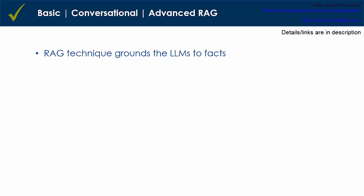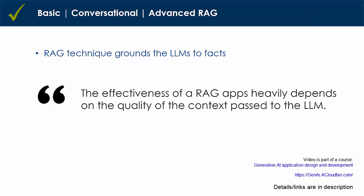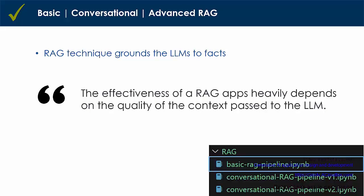In this lesson I introduced you to the basic, conversational, and advanced RAG pipelines. The retrieval augmented generation or RAG technique grounds LLMs to facts. RAG helps with reducing the chances of hallucination, it addresses the knowledge cutoff challenge, and it makes the LLM use the temporary knowledge in the prompt, which in turn prevents the LLM from generating imprecise responses. The effectiveness of a RAG application heavily depends on the quality of the context passed to the LLM. Starting with the next lesson you will learn multiple techniques that can enhance the performance of an LLM. I suggest you go through the code shared in this lesson and feel free to experiment with it. Happy learning and I'll see you in the next video.